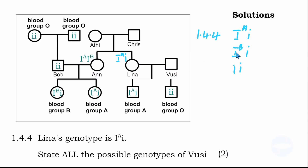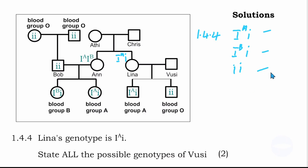The possible genotypes that VUCI can have are: blood type A (I superscript A and small i), blood type B (I superscript B and small i), and blood type O (small i and small i). For example, for blood type B, the child would get blood type B from the mother and small letter i from the father. So those are the three possible genotypes.